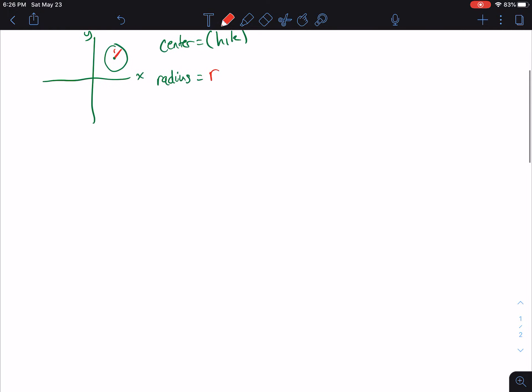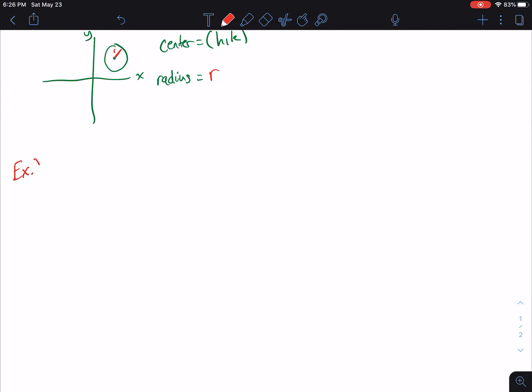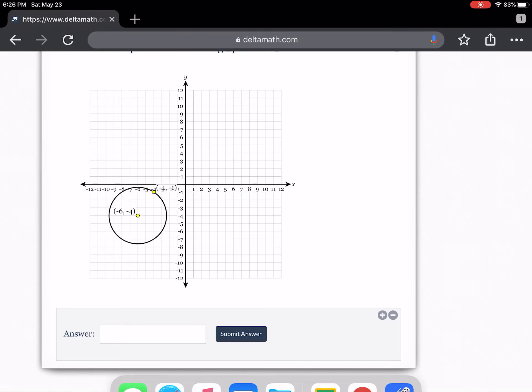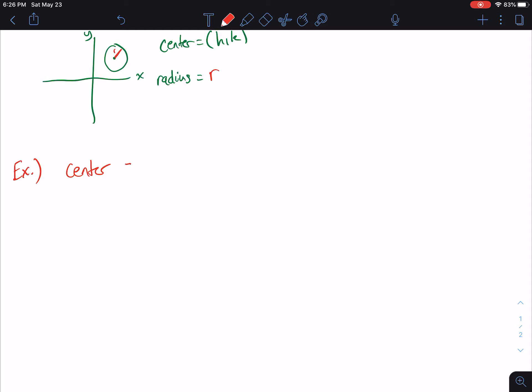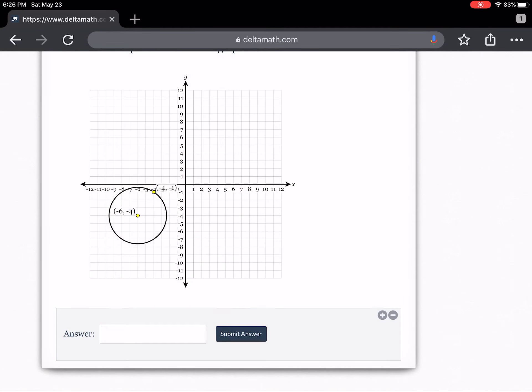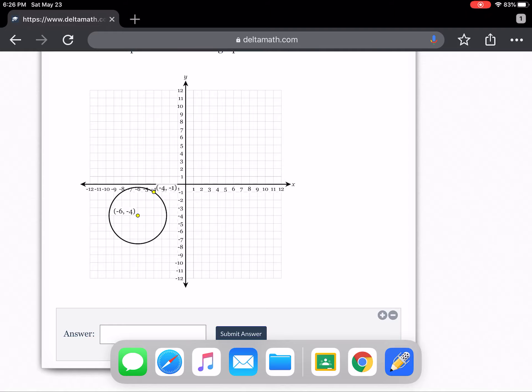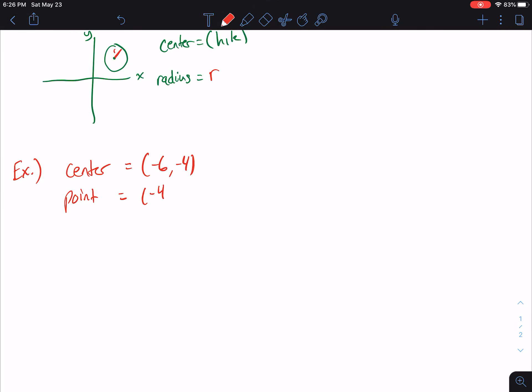So let's see how this works. So the center, so for our example here, we're going to be given the center. And the coordinates of our center are (-6, -4). And then we're going to be given just a random point. So this is a little bit different. So our point here is (-4, -1).